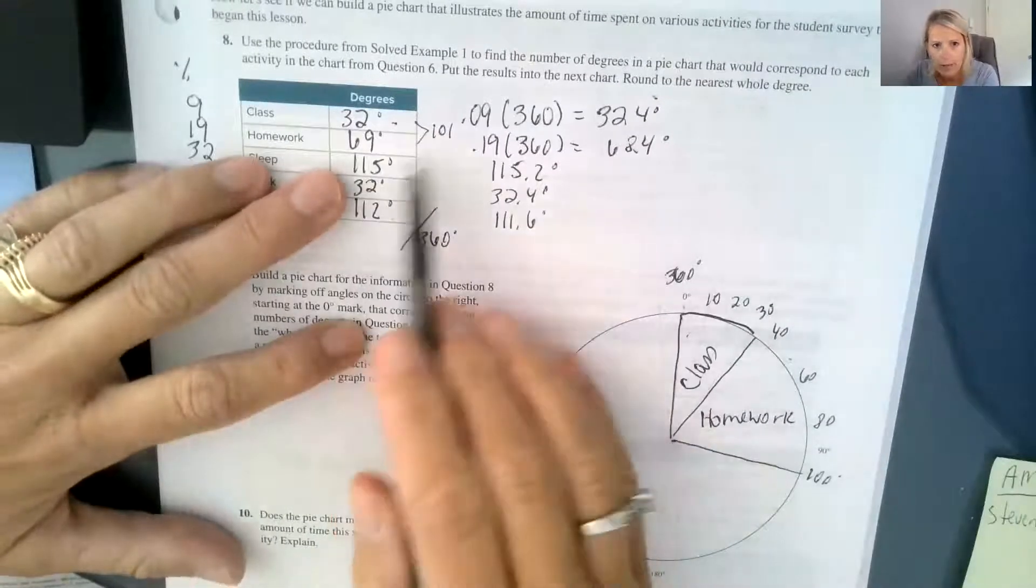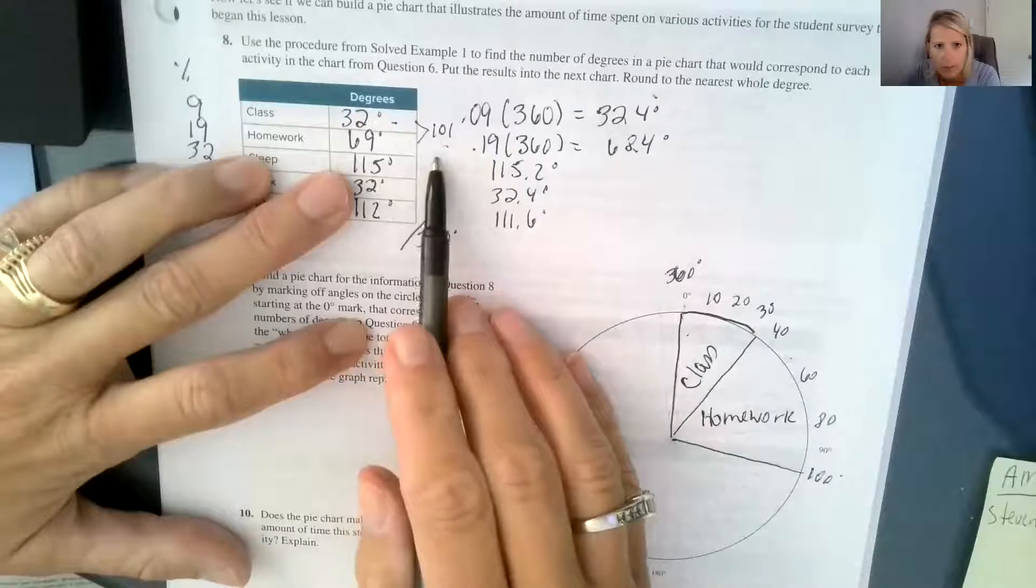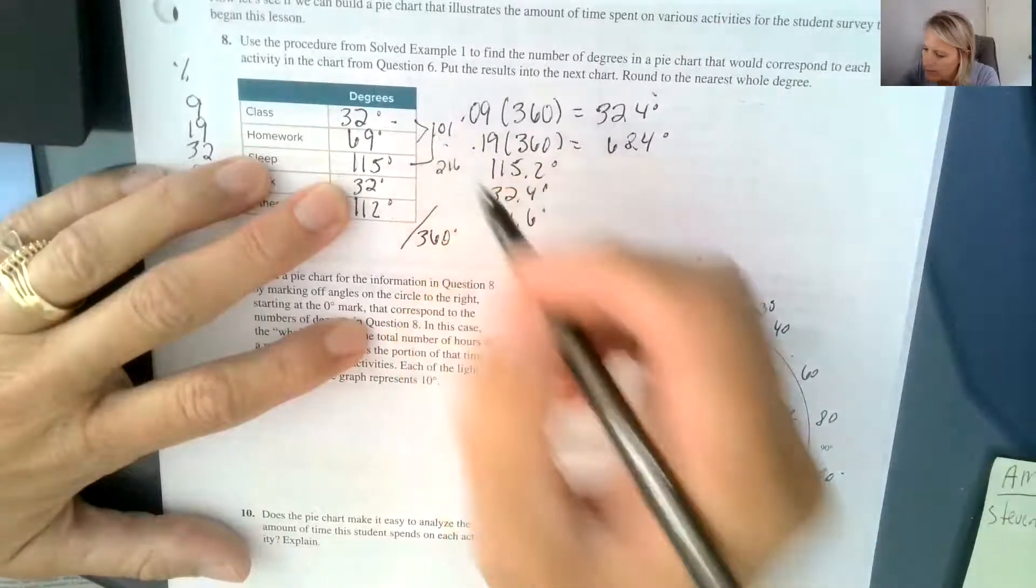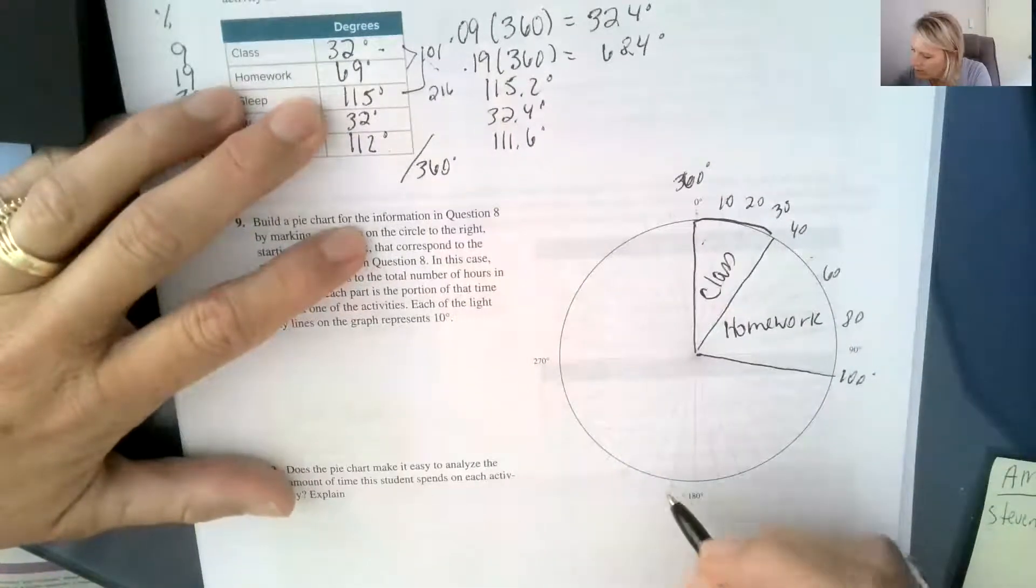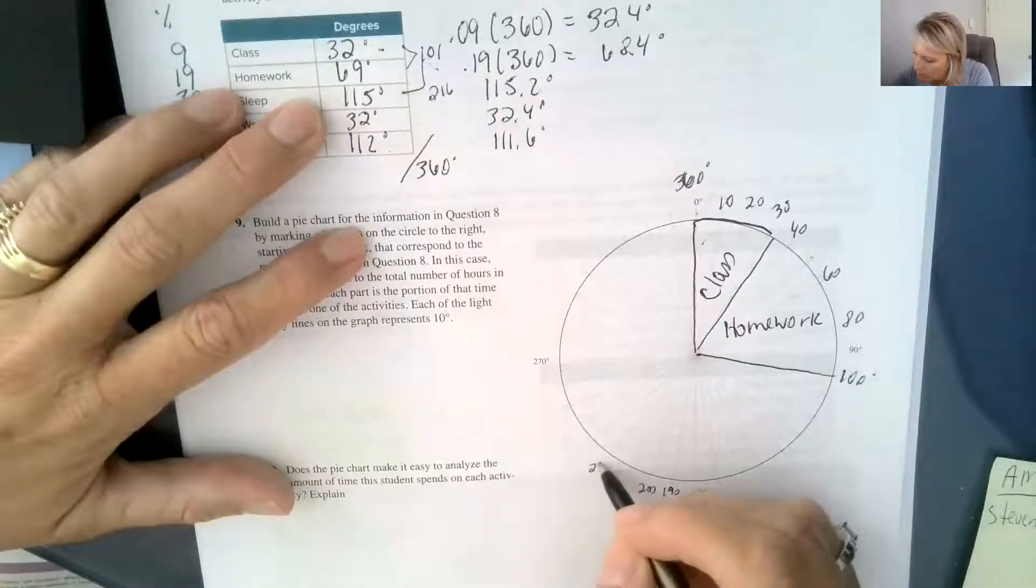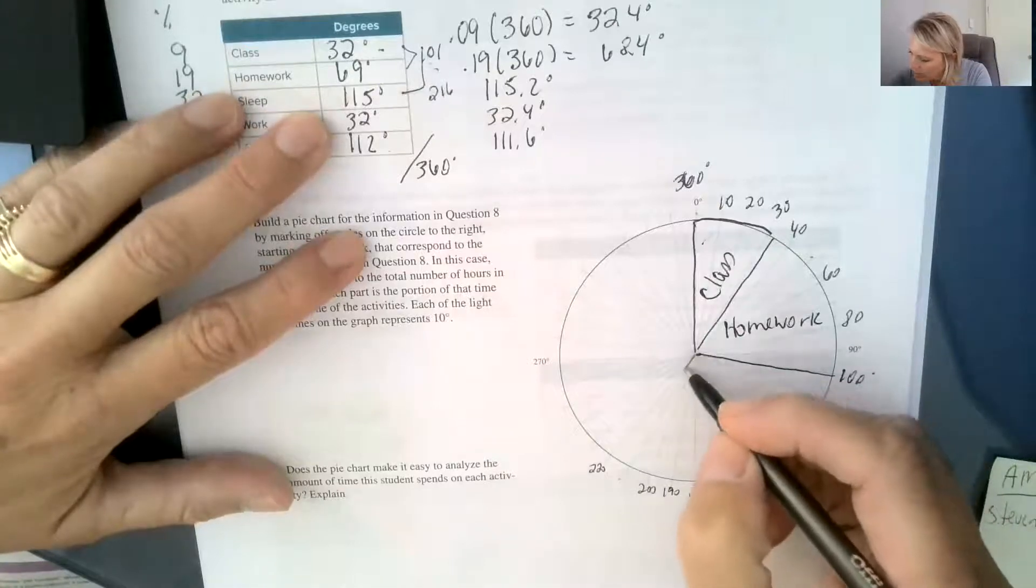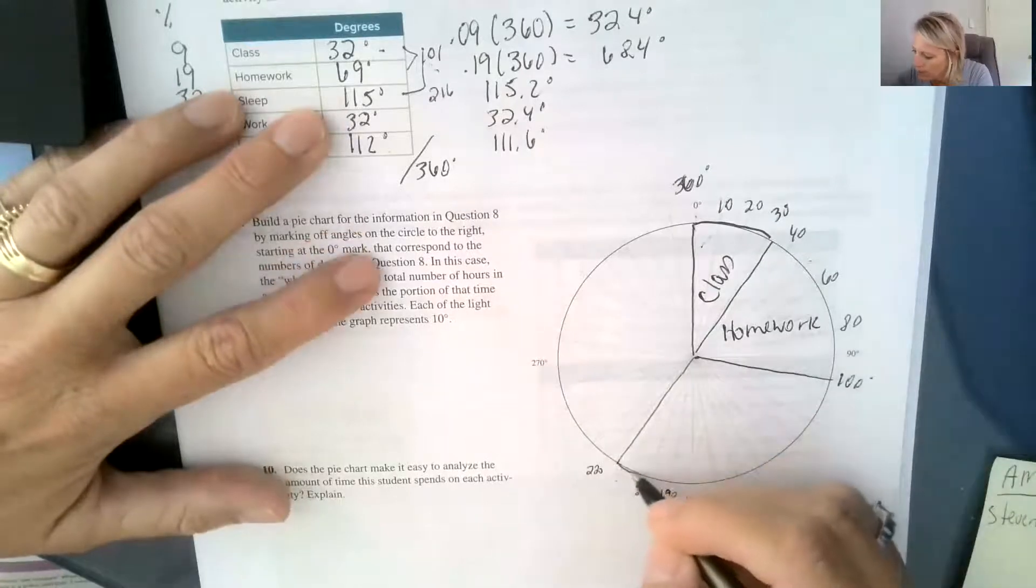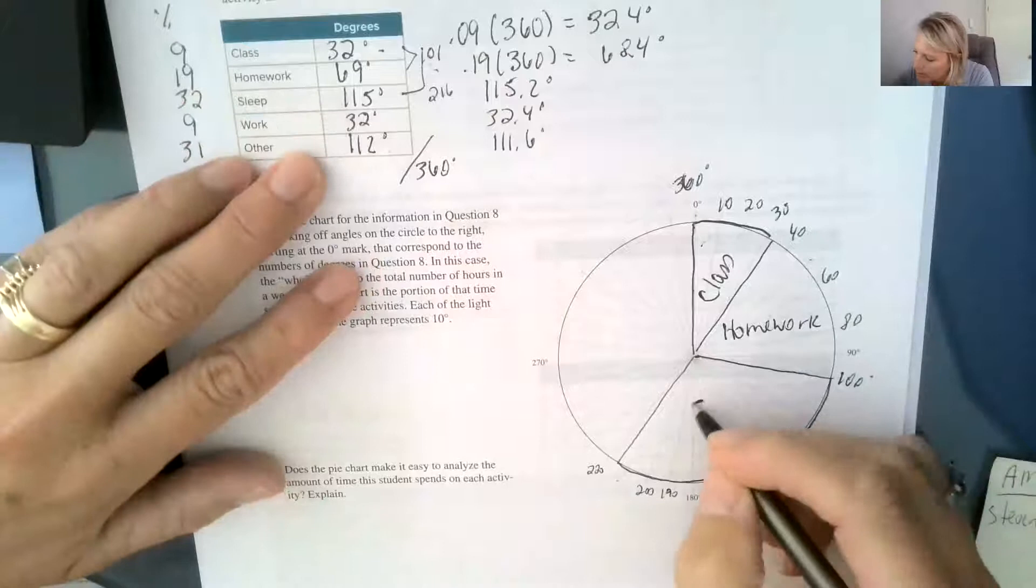And then if I add another 115 to that, I know that I'm at 101 plus 115, so I'm about at 216. And so 180 is here, so 190, 200, 210, 220. So I know that 216 is right in between there, so I know that this space right in here is going to be my sleep space.